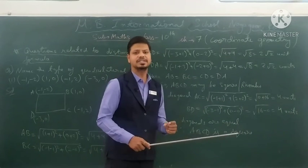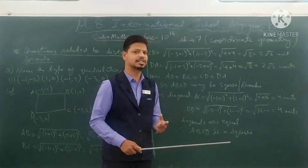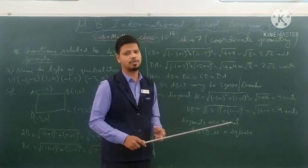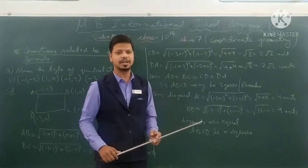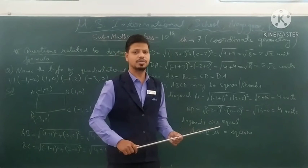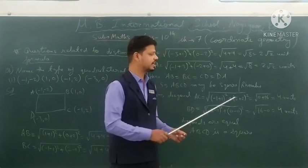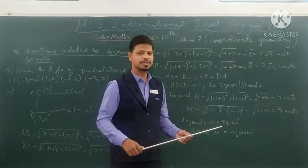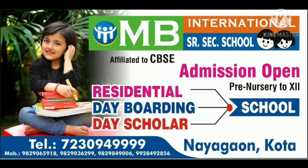Note: if the four sides are equal but the diagonals are not equal, then in that case the quadrilateral would be a rhombus, not a square. Here both diagonals are equal, so it is confirmed as a square. I hope you understand this video. Thank you.